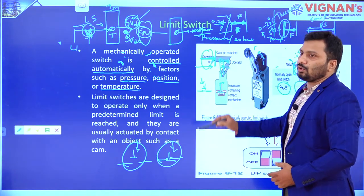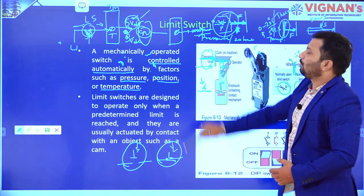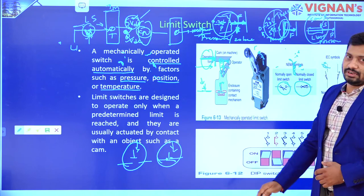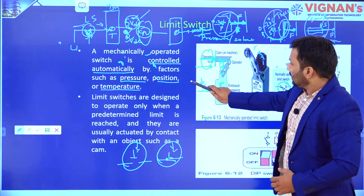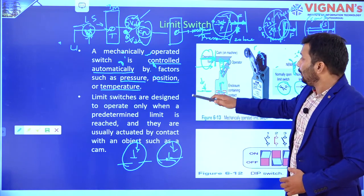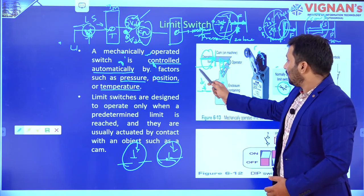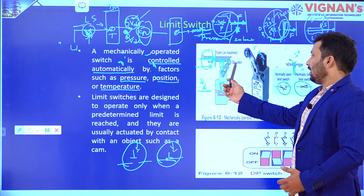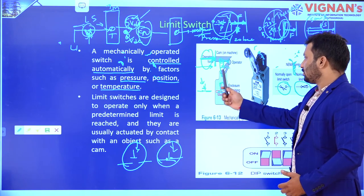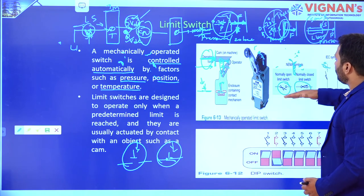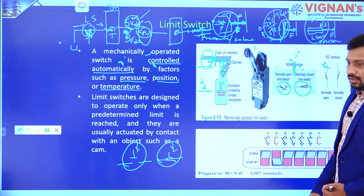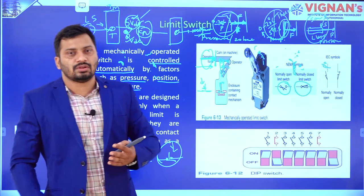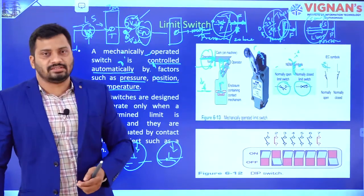For this limit switch, the operating force may come from any arrangement — from temperature arrangement, from some position arrangement — anything you can connect to this particular one. It is going to provide some force on this mechanical element. You need to design some mechanical circuitry in such a manner that it gives some force on this particular actuator — that is the cam here. Based on that actuation, up to some limit it is in this position; after that limit it comes to another position. Like that it is going to open and close normally open and normally closed limit switches. This is why I stress more on this particular limit switch — in industries, maximum places this limit switch is used, giving input signal to the input module of the PLC.